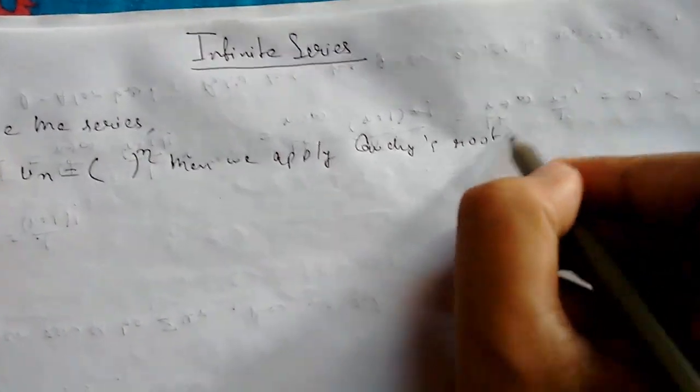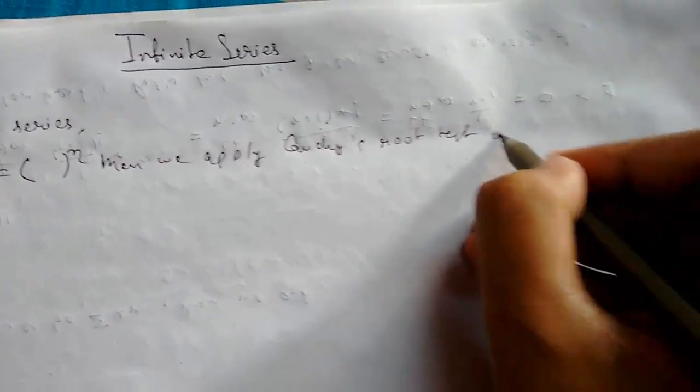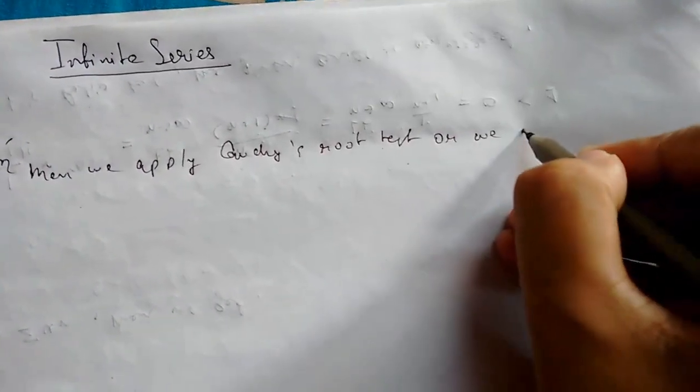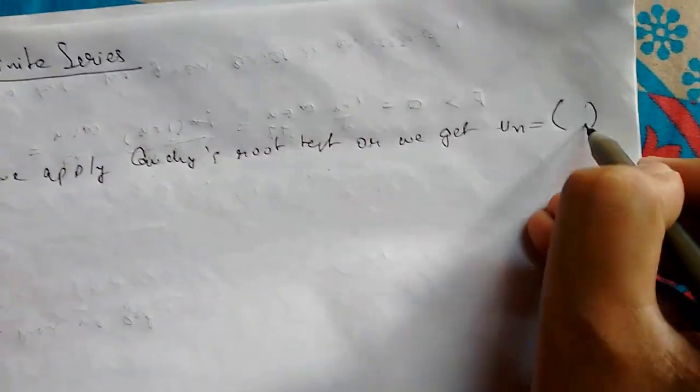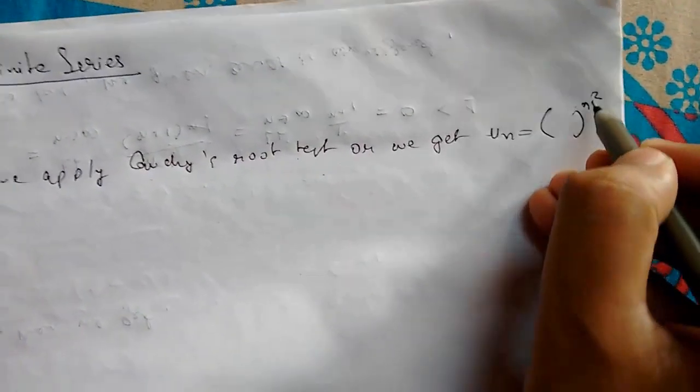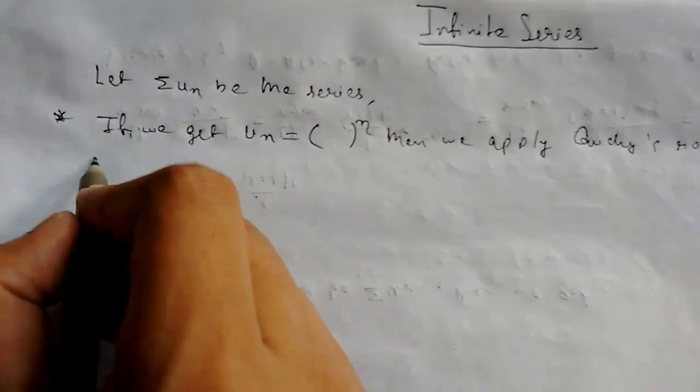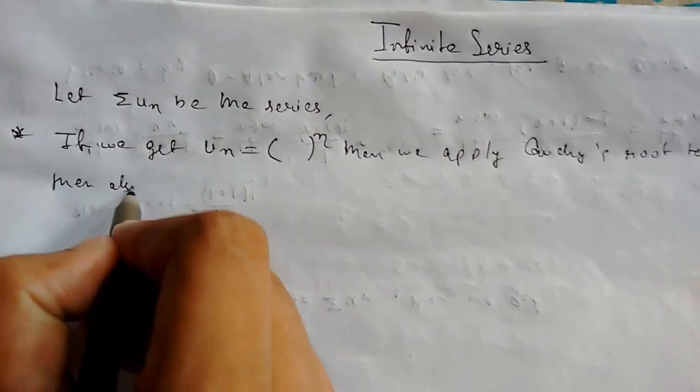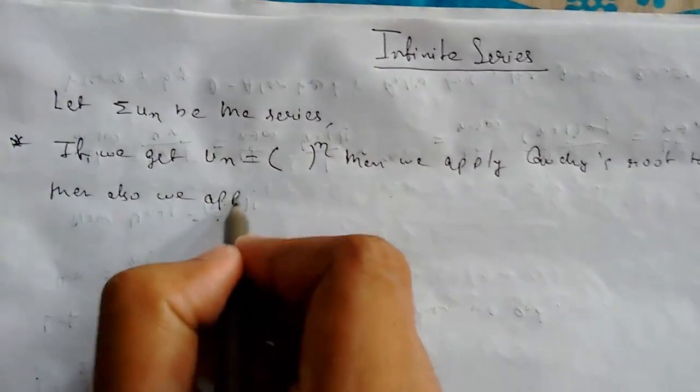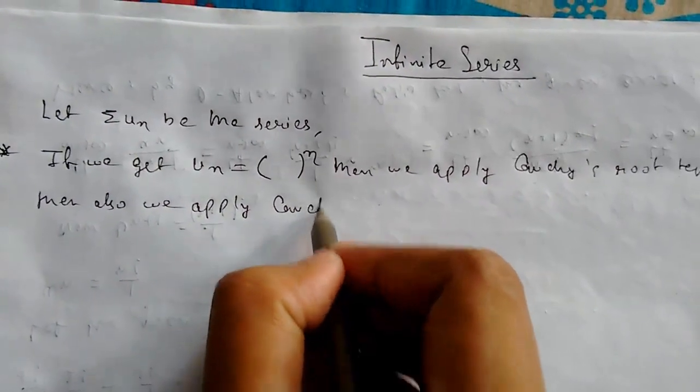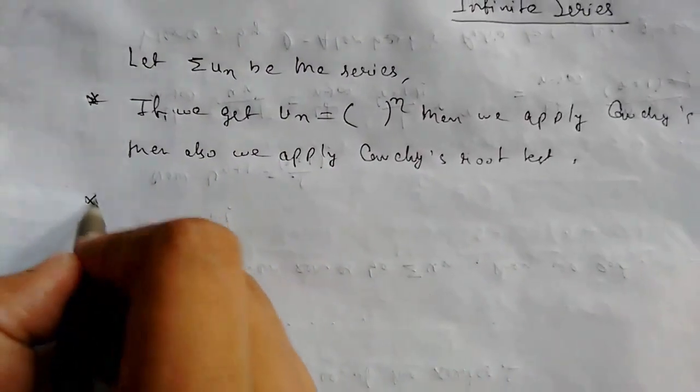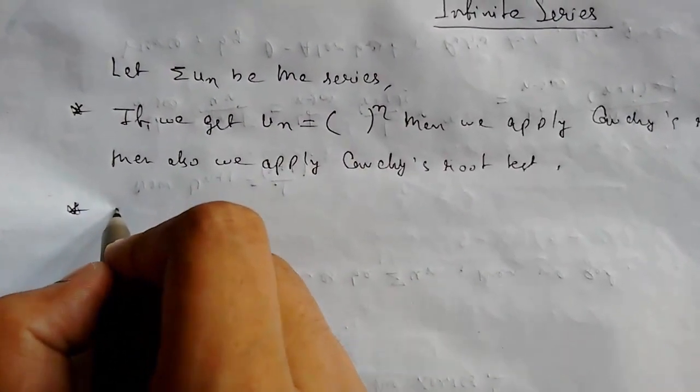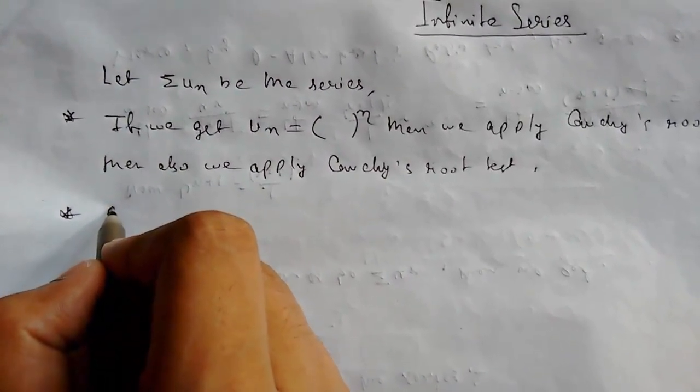Cauchy's root test. Or if we get un equals something to power n square, then also we apply Cauchy's root test. Number two, suppose something like this: